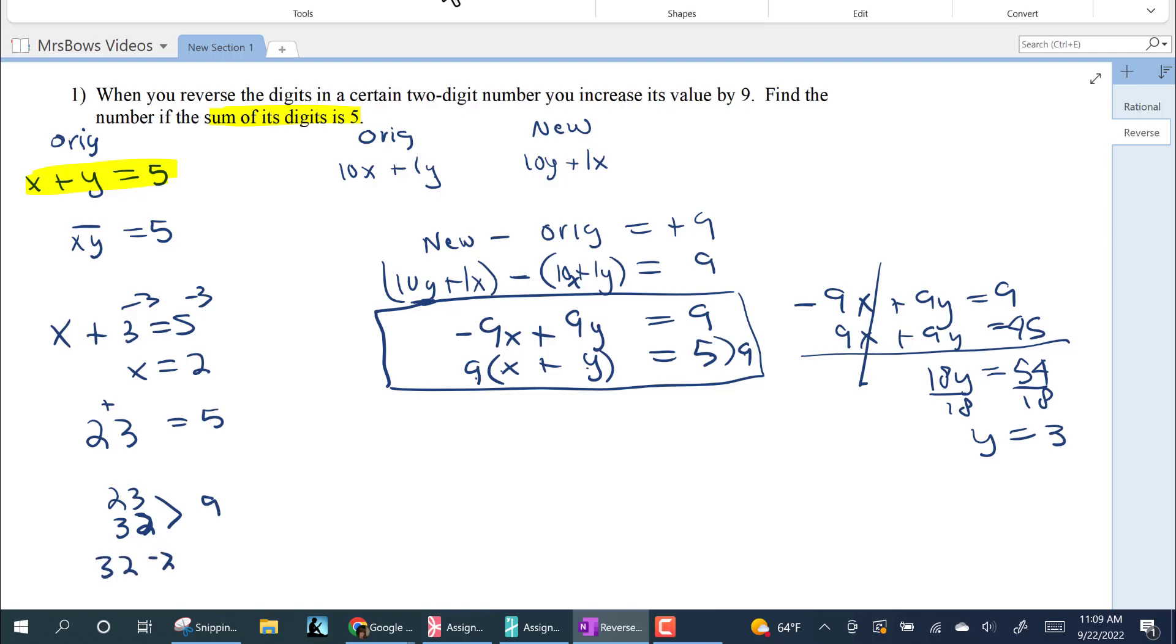32 subtract 23 is nine. There you go. That is it. Now, wait, wait, wait, I'm gonna add this.